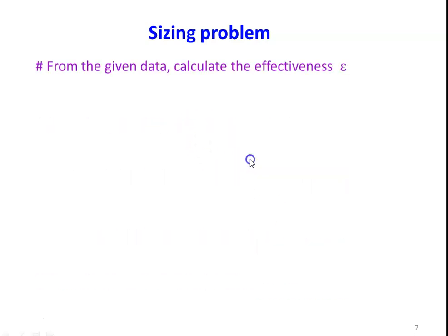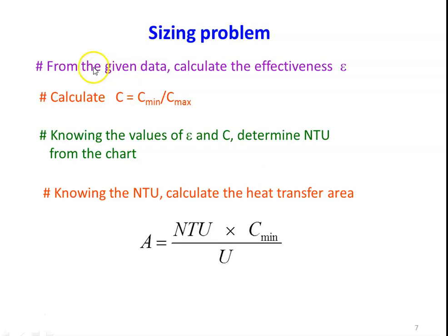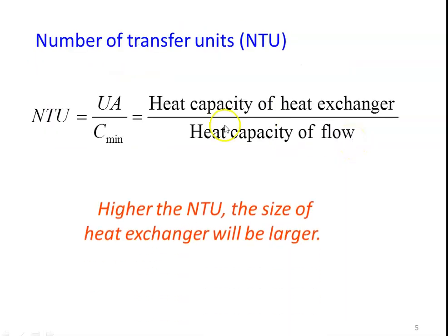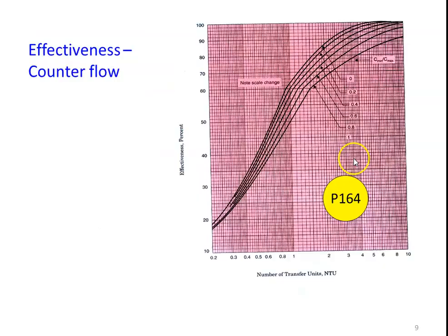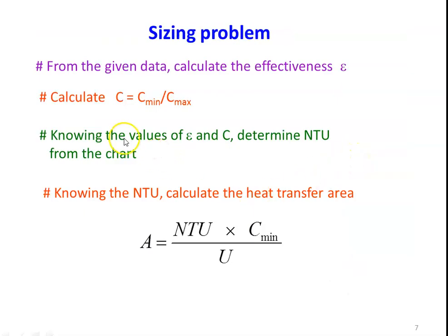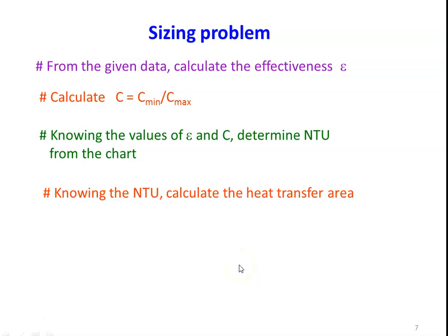For the Sizing Problem, from the data given, calculate the effectiveness of the heat exchanger using the relevant equations. Then calculate the C ratio: C minimum by C maximum. Based on the effectiveness and the C ratio, determine the NTU from the same chart. Knowing the NTU, calculate the area: Area equals NTU into C minimum divided by U. The procedure is similar — it may be a sizing or rating problem depending on the given data.